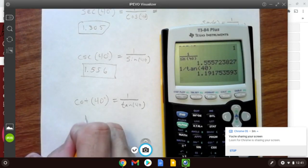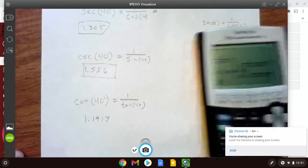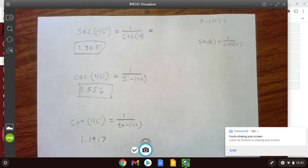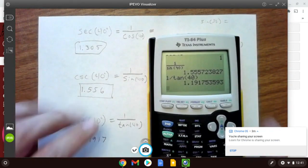And for cotangent, 1 divided by tangent of 40 gives 1.1917.